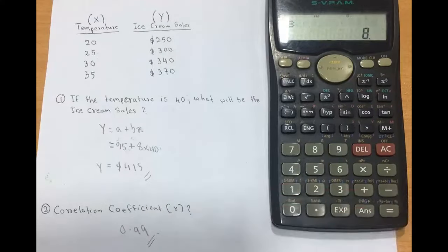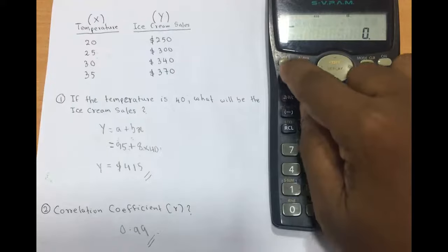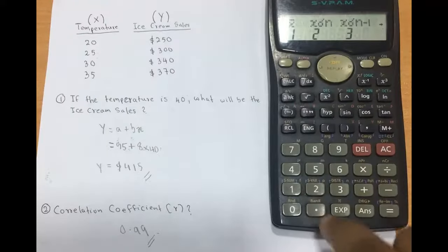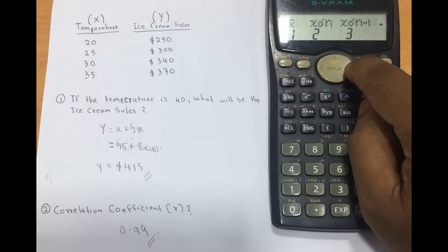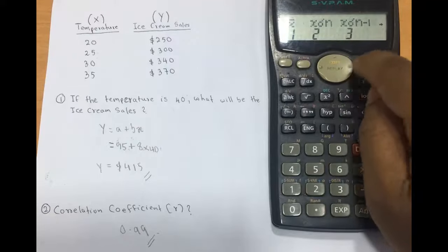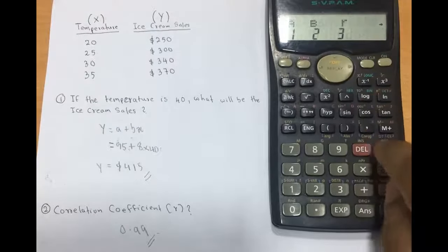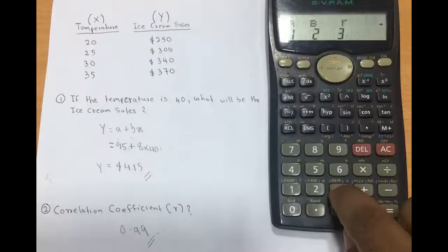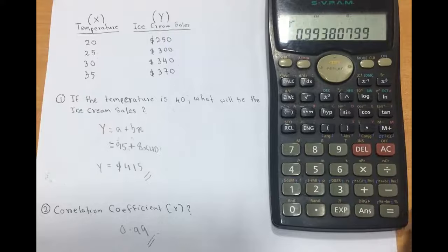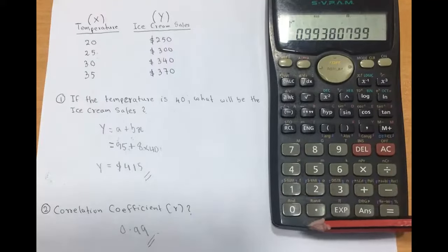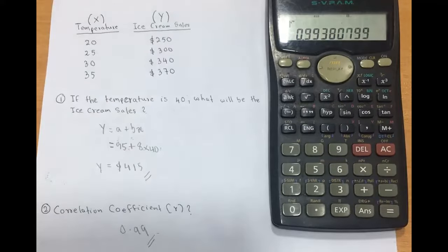Next, to find the correlation coefficient r, press AC, then SHIFT and number 2. Use the right arrow on the replay button two times. R is in number 3 — press number 3, then press EQUALS. The correlation coefficient r is 0.99. This is how you find the a value, b value, and r value using this calculator.